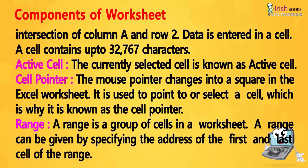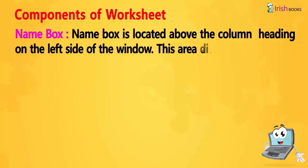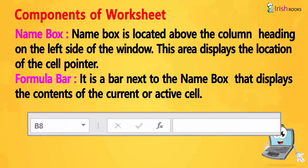A cell contains up to 32,767 characters. Active cell: The currently selected cell is known as the active cell. Cell pointer: The mouse pointer changes into a square in the Excel worksheet and is used to point or select a cell, which is why it is known as the cell pointer. Range: A range is a group of cells in a worksheet, specified by the address of the first and last cell. Name box: Located above the column heading on the left side of the window, it displays the location of the cell pointer. Formula bar: A bar next to the name box that displays the contents of the current or active cell.